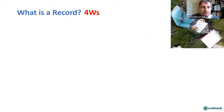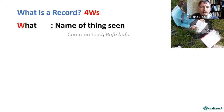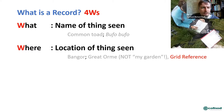So what is a record? Essentially it comes down to these four W's. The first is 'what' — the name of the species you're recording. You can record it by common name, in this case Common Toad, or the scientific name, Bufo bufo.